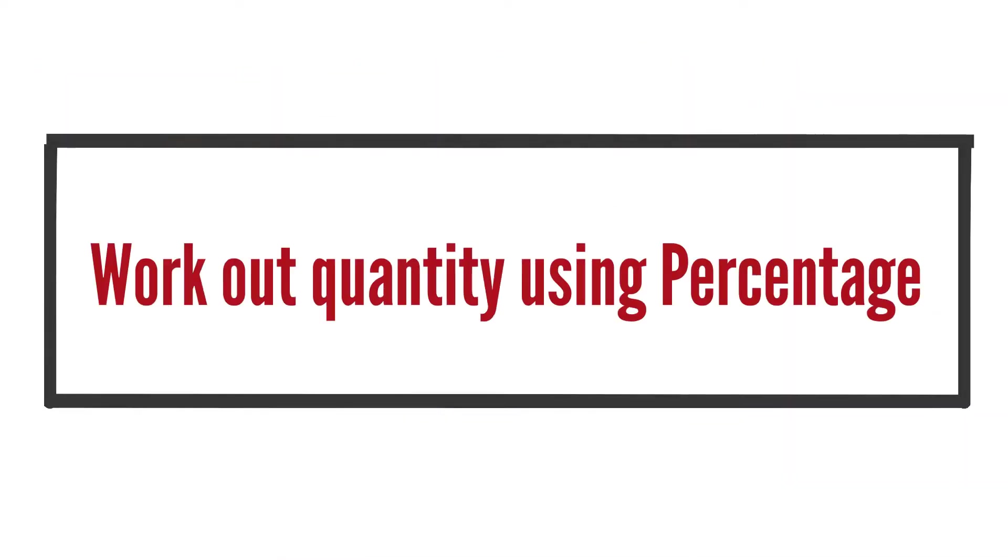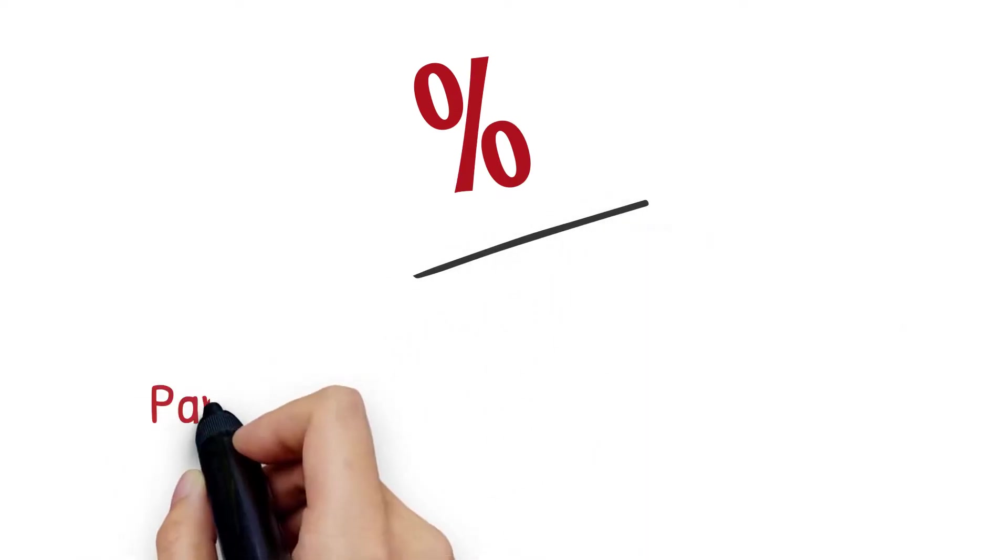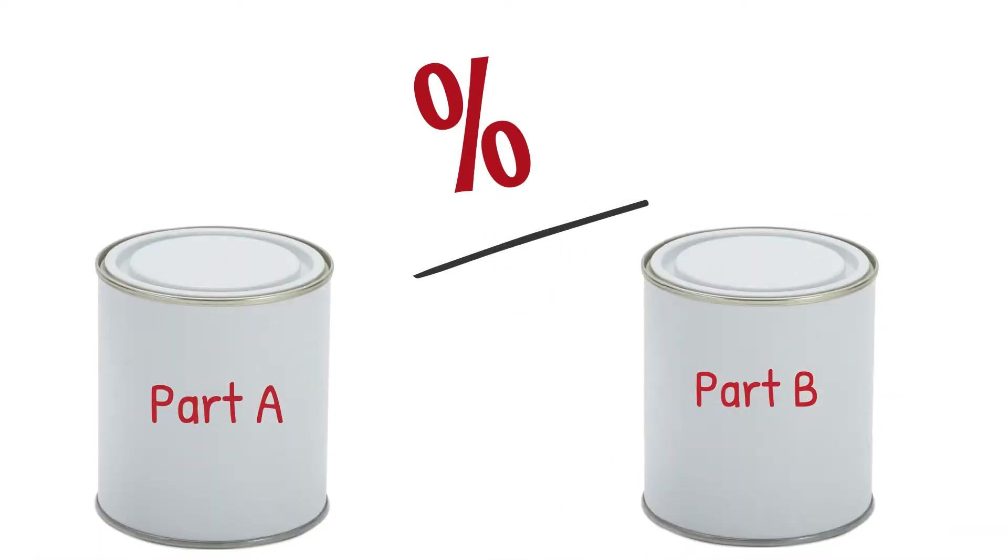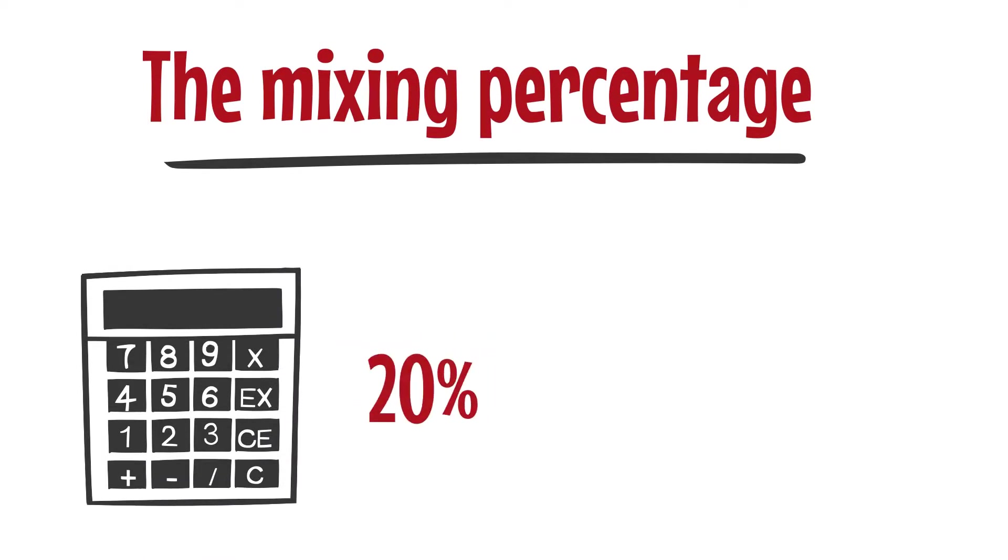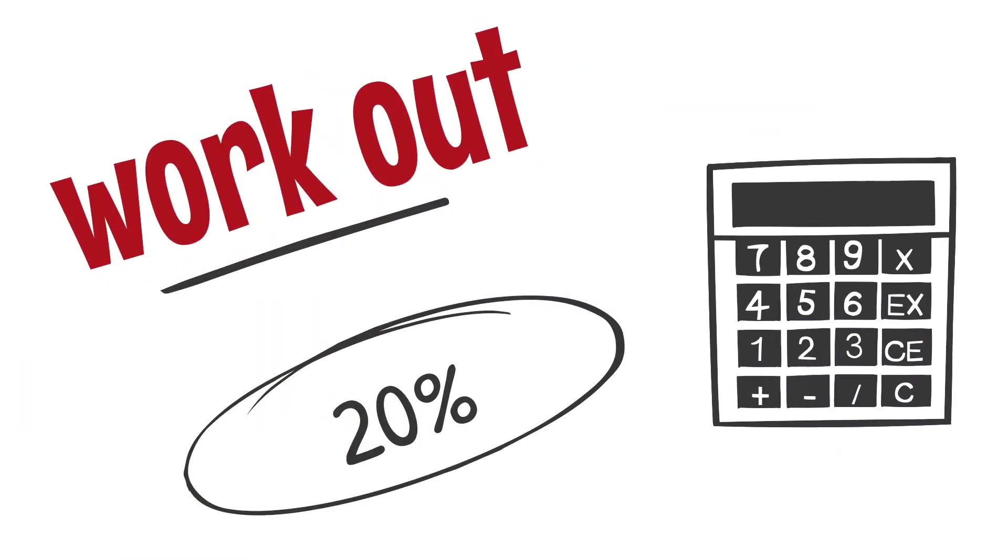Work out quantity using percentage. Now that you know the percentage, you can calculate the quantity of Part A and Part B. If the mixing percentage is 20%, 4 to 1 ratio, work out 20% of the total quantity.